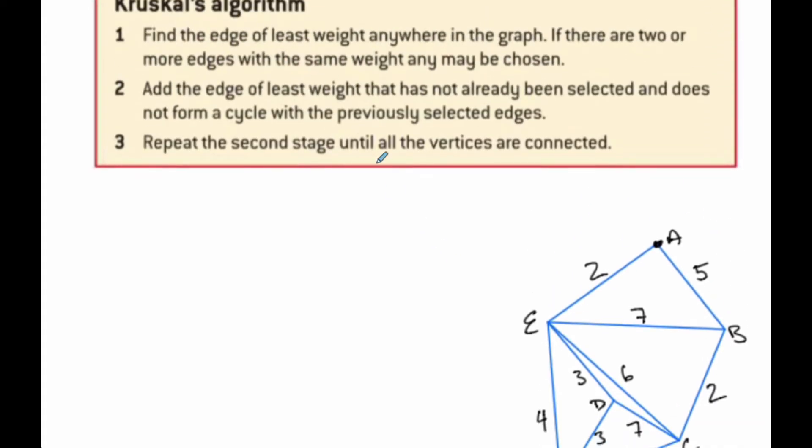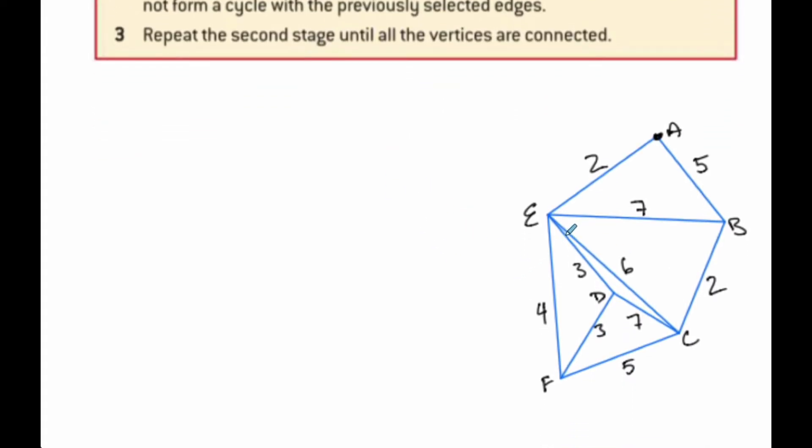So when I do this, I want to find the edge of the least weight. I have a weight of 2 and a weight of 2 here. Those two are least. I can choose either one. It does not matter. So I am going to start with AE, which is 2. And so I'm also going to draw an AE over here. A to E. This is 2. Alright, and so I started with that.